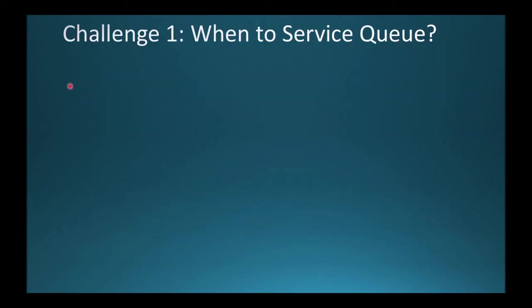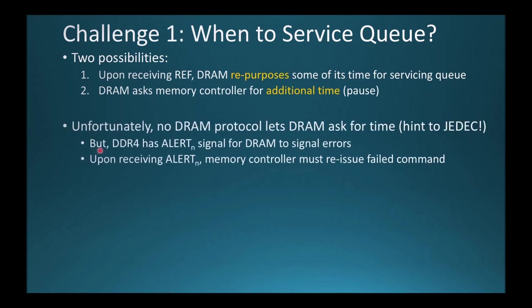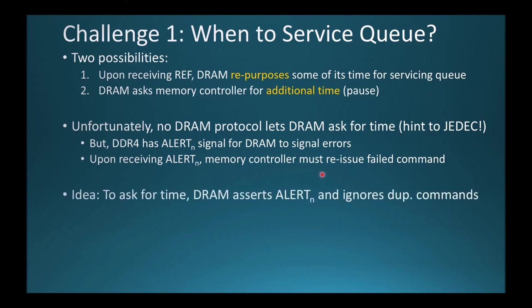Panopticon needs to address two challenges. Challenge number one is when to service the queue. We envision two possibilities: upon receiving a refresh command, the DRAM repurposes some of its time to service the queue; or the DRAM asks the memory controller for additional time. No DRAM protocol currently lets DRAM ask for time, although we think this is a must-have feature. However, in DDR4, DRAM uses AlertN to signal errors to the memory controller. Upon receiving this signal, the memory controller stops issuing new DRAM commands and instead reissues the old memory access. Panopticon retrofits AlertN to effectively trick the memory controller to pause issuing new DDR commands, requiring no modifications to any hardware other than DRAM itself.